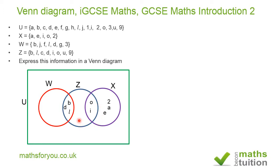Now I fill in the elements that are peculiar only to Z: U, 9, and C. Counting them I get eight elements in Z total, which matches the count in Z — so that's correct.